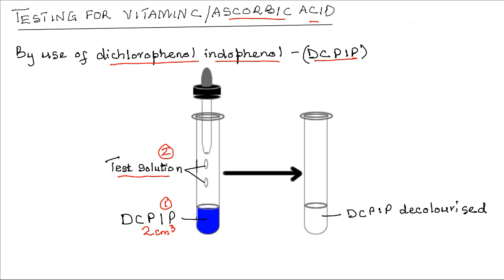Now, if the test solution contains vitamin C, then the DCPIP is decolorised. The fewer the number of drops required to decolorise the DCPIP from blue to either clear or blue to purple, the higher the concentration of vitamin C.